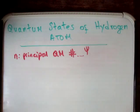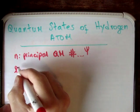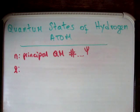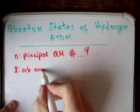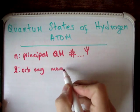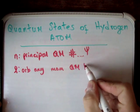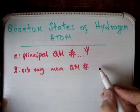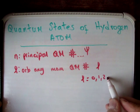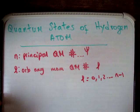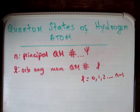Next, let's look at the orbital angular momentum quantum number. This is only a quantum number — it does not give you your orbital angular momentum. We call this L, and L can go from 0, 1, 2, all the way up to N minus 1. It is a quantum number and does not give you your actual orbital angular momentum.